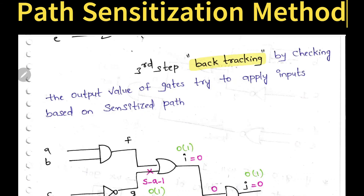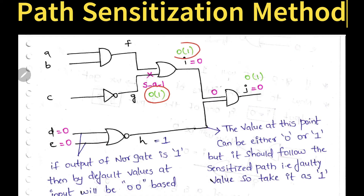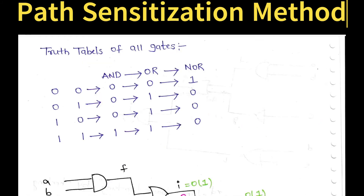The third step is backtracking. By checking the output values of gates, we try to apply inputs based on the sensitized path. Using the output at node I equal to 0, we need to find the values of F and G. Using G, we find C; using F, we find A and B. Using node H, we find D and E. Simply, by seeing the output, we predict the inputs. To do this clearly, I have written the truth tables of all gates in our example — AND, OR, NOR, and NOT gates.